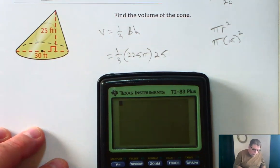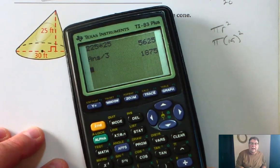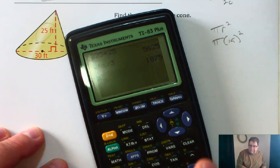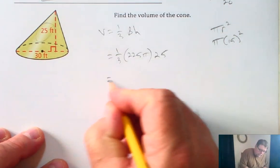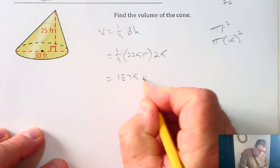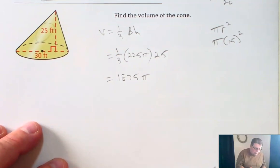So I will do 225 times 25. I'll get 1875. And don't forget to put pi, because I wanted to leave it in terms of pi.